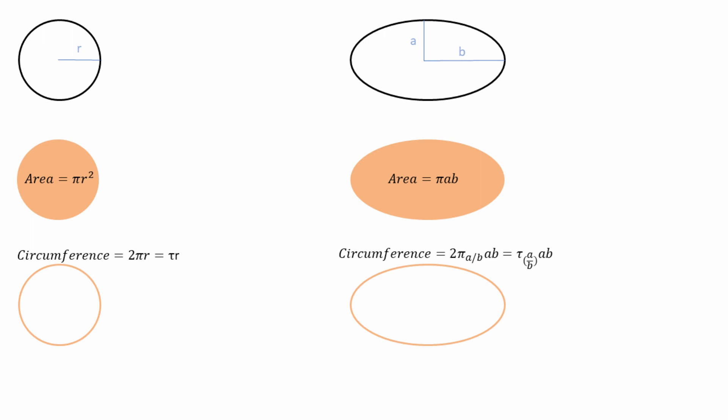So, now we have a much more pleasing formula for the circumference. We moved all the infinite complexities into the constant where they belong.